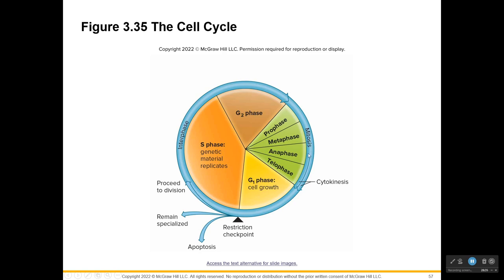Mitosis is division of the nucleus, and there are four sub-phases: prophase, metaphase, anaphase, and telophase — which spells PMAT. Spindle fibers move chromosomes to separate them. After mitosis, you have two nuclei. Cytokinesis usually begins during telophase and ends shortly after — it's a quick process. It divides the rest of the cell, so where we started with one cell, we now have two.